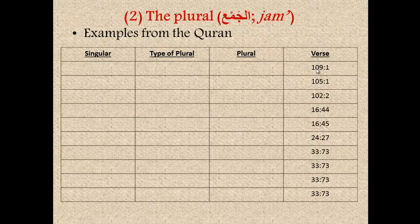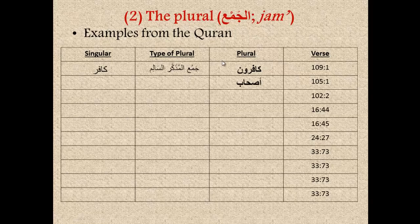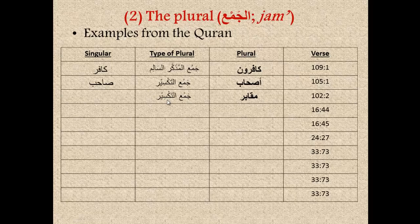In verse number 1 of Surah Al-Kafirun (109), Allah says: 'qul ya ayyuha al-kafirun.' The plural is kafirun — disbelievers. We hear the 'un,' which tells us it's a sound masculine plural, jam'a al-mudhakar al-salim. It's easy to figure out the singular: we just drop the 'un' at the end to give kafir. In verse number 1 of Surah 105, Allah says: 'alam tara kayfa fa'ala rabbuka bi-ashabi al-fil.' Ashab means companions — this is an example of a broken plural, jam'a al-takseer; the singular is sahib. In verse 2 of Surah 102 (Al-Takathur), we have 'hatta zurtumu al-maqabir.' Maqabir means graves — another example of a broken plural; the singular is maqbar.